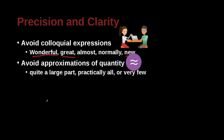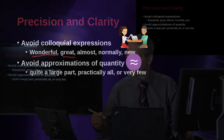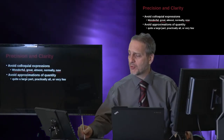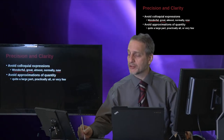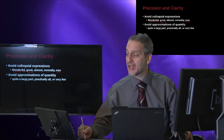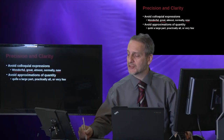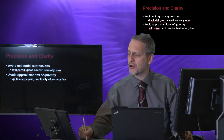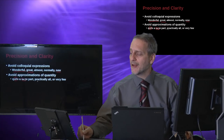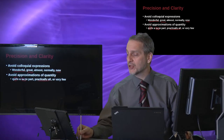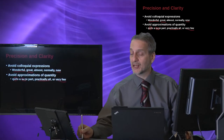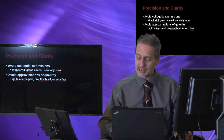Avoid approximation — don't say things that are unclear in their size and measurement. For example, 'quite a large part' — why not just say a part, or say how much: one-third, two-thirds? 'Practically all' — does that mean 90%, 95%, 99%? We don't know. 'Very few' — what does that mean? Under 10%, under 5%? Just don't use these.